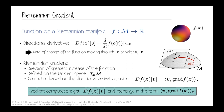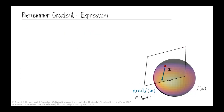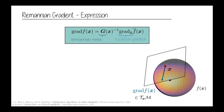Since we always have a Riemannian metric, it allows us to have a simpler solution: in general, your Riemannian gradient equals the inverse of your Riemannian metric times your Euclidean gradient. To compute the Euclidean gradient, you define a smooth extension of your function so it equals the original function on the manifold and extends smoothly off it — in practice you can usually just use the same function.